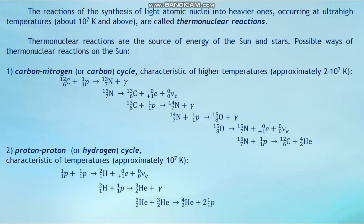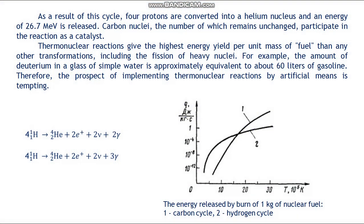Possible ways of thermonuclear reactions are the source of energy in the sun. The first way is the carbon-nitrogen (CN) cycle, characteristic of high temperatures approximately 10⁷ K. The second way is the proton-proton or hydrogen cycle, characteristic of temperatures approximately 10⁷ K. As a result of this cycle, four protons are converted into a helium nucleus and an energy of 26.7 MeV is released. Carbon nuclei, the number of which remains unchanged, participate in the reaction as a catalyst.